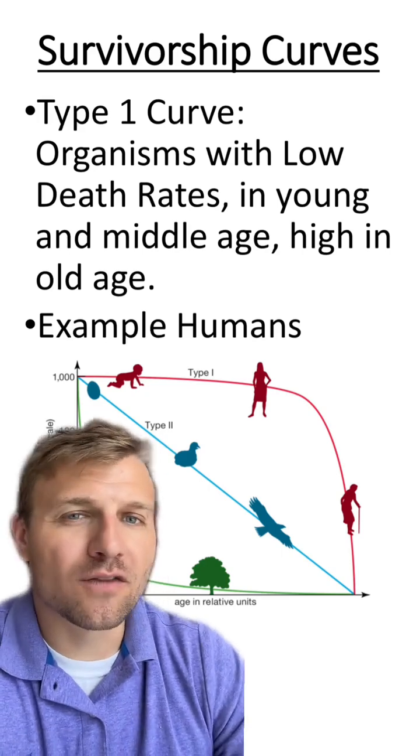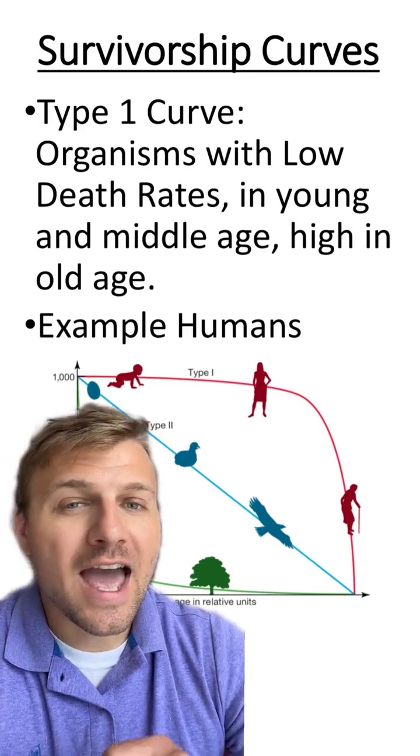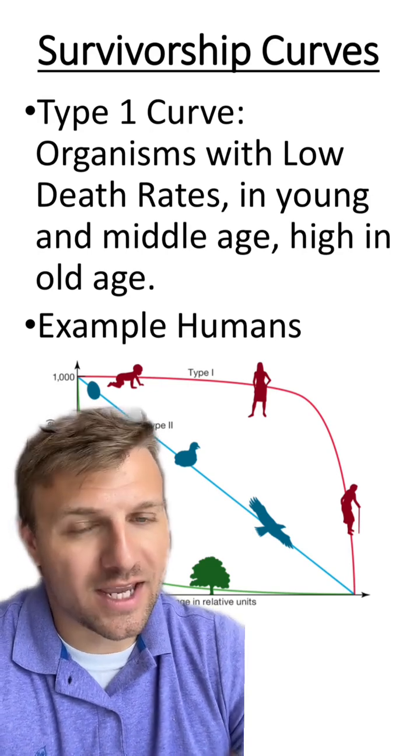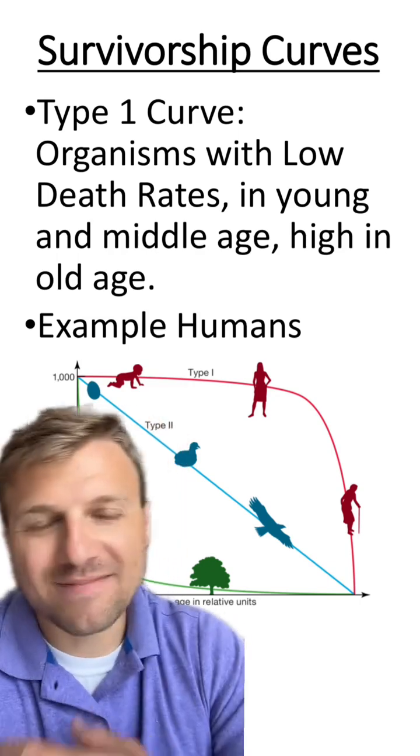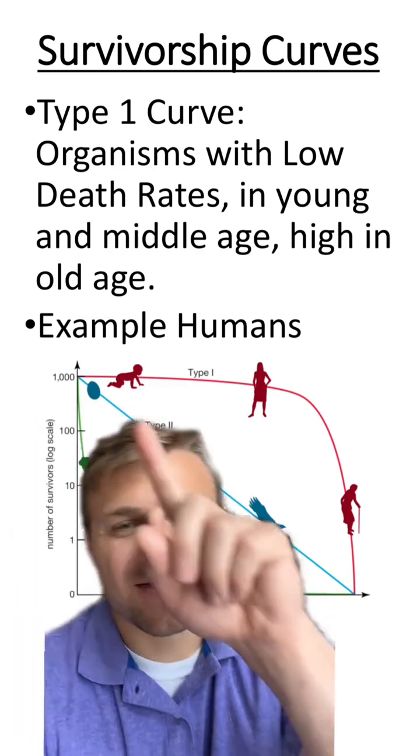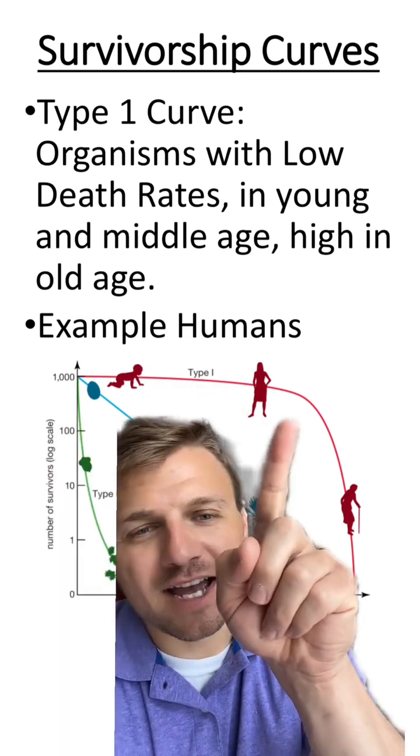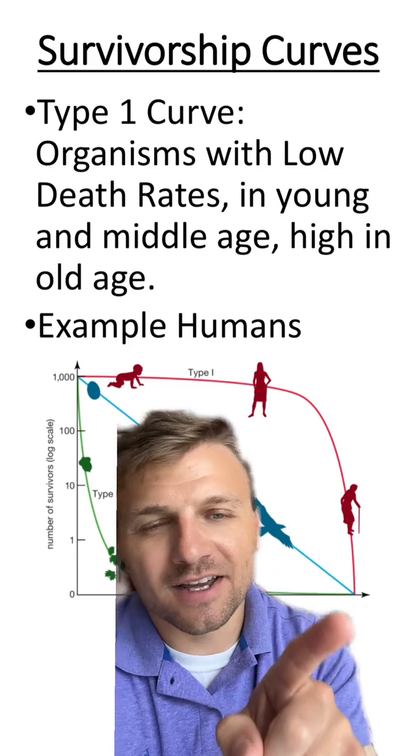In a type 1 curve, organisms have a low death rate at infancy, however, have a high death rate at old age. The common example for this type of curve are humans, at least humans in today's world. There is a low death rate in infants. However, as we get older, there is a higher and higher death rate.